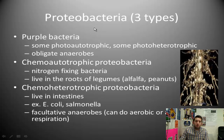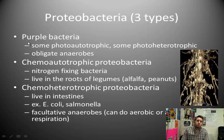Within the proteobacteria group, there are three subgroups: the purple bacteria, the chemoautotrophic proteobacteria, and the chemoheterotrophic proteobacteria. Let's work through these one at a time, starting with the purple bacteria. Most of them are photoautotrophic; some are photoheterotrophic.